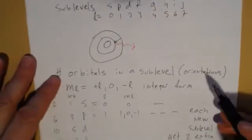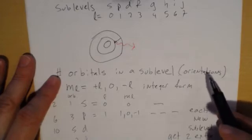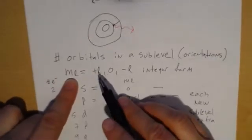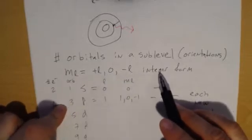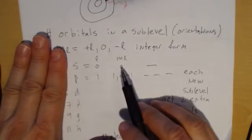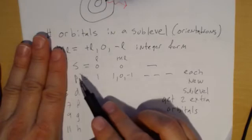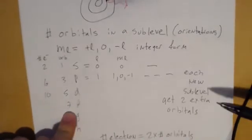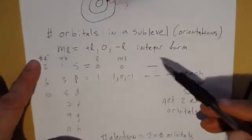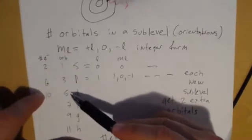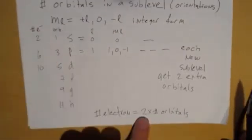The number of orbitals in a sublevel, or different orientations the orbitals can have, is related to this m sub l number. The m sub l quantum number goes from positive l to 0 to negative l in integer form. So when l equals 0, like an s, there's only one orientation, one orbital in that sublevel. When we have a p, which has an l of 1, there's 1, 0, minus 1—we get three sublevels. We would expect d to have 5 and f to have 7. The number of electrons in those sublevels is two times the number of orbitals. So if I have one orbital, I can have two electrons. Three orbitals, six electrons. Five orbitals, ten electrons.